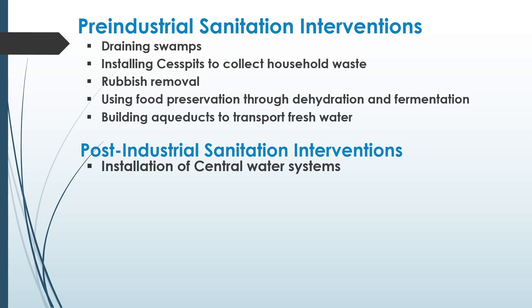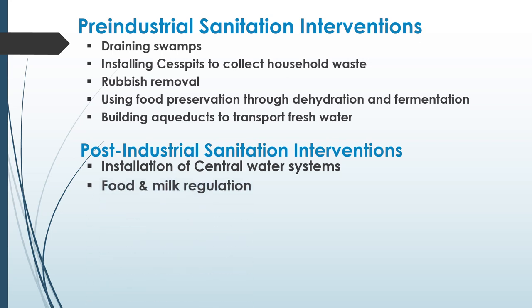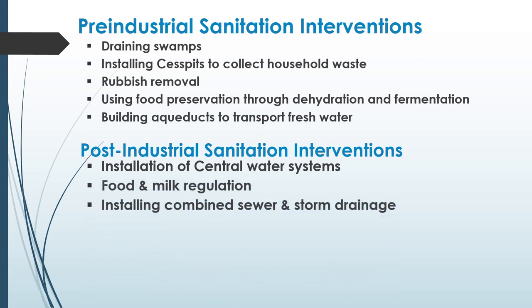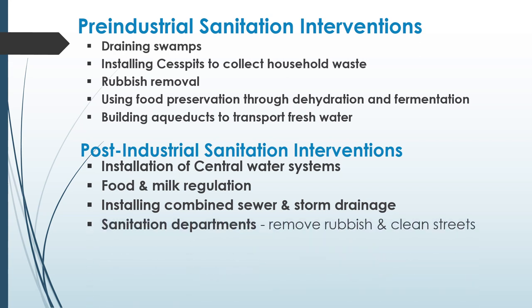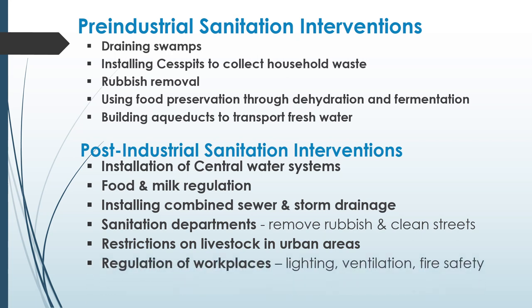Post-industrial interventions included installation of central water systems, food and milk regulation, installing combined sewer and storm drainage, and sanitation departments to remove rubbish and clean streets. There began to be restrictions on livestock in urban areas and regulations of the workplace — fairly simple regulations regarding lighting, ventilation, and fire safety.